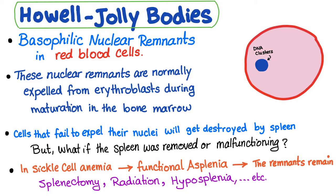These clusters will absolutely not be removed — they will persist. In sickle cell anemia, for example, there is functional asplenia, also known as autosplenectomy, so these remnants will remain. These Howell-Jolly bodies will be visible in the blood film under the microscope. Similarly, in splenectomy, you don't have a spleen, so these cells will persist.